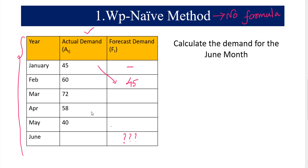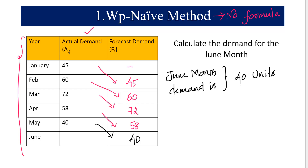We just take January's data as the forecast for February — so 45 becomes the forecasted data for February. Then February's actual data becomes the forecast for March, March's data becomes the forecast for April, April's data becomes the forecast for May, and May's data becomes the forecast for June. The forecasted demand for the month of June is 40 units.